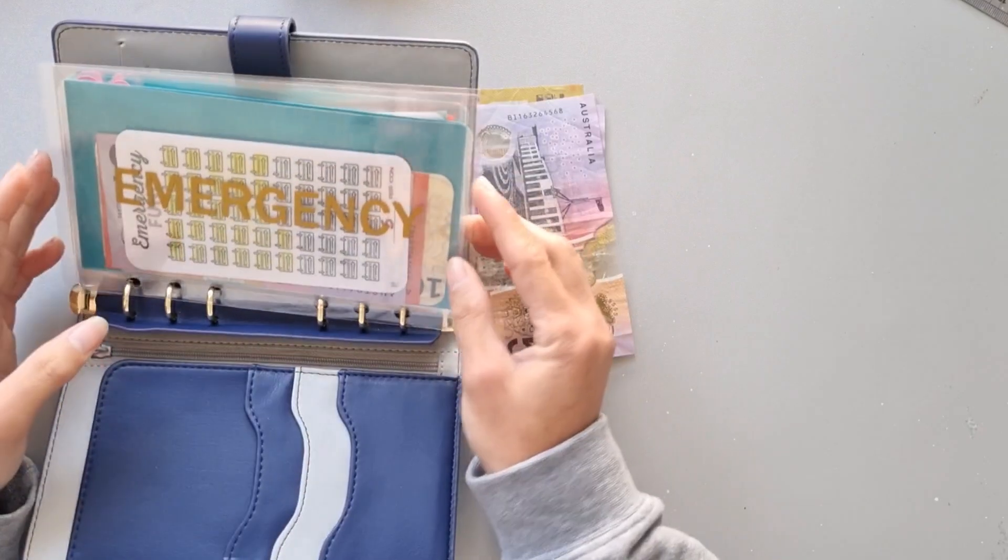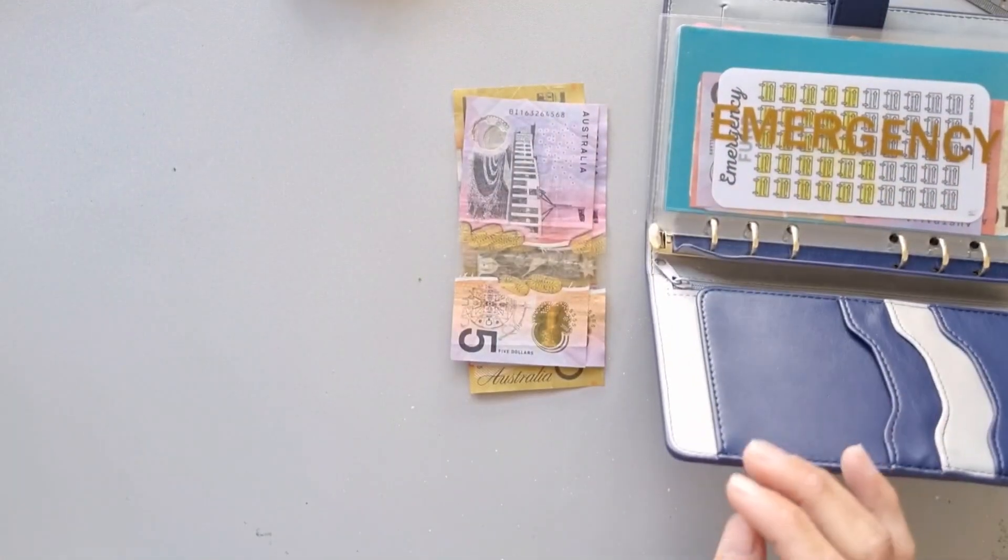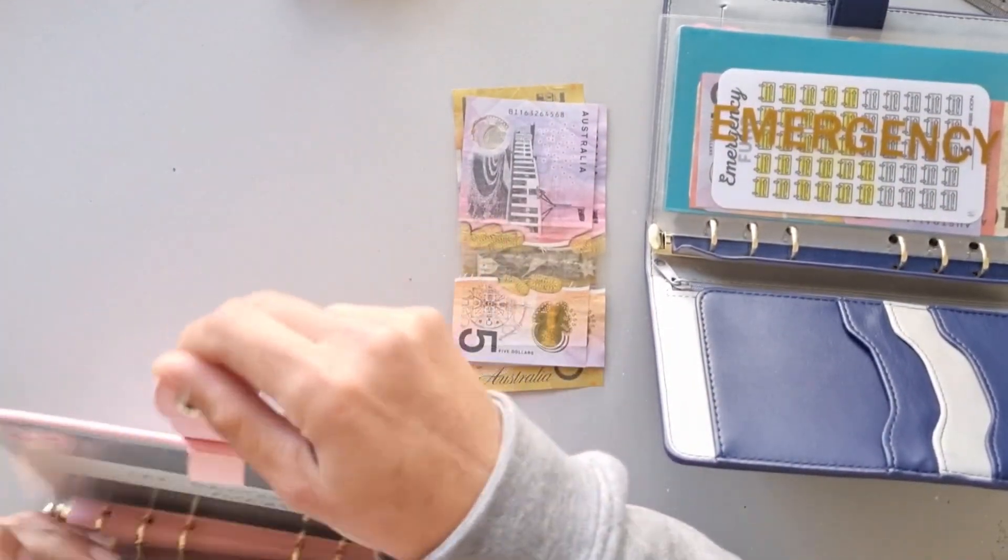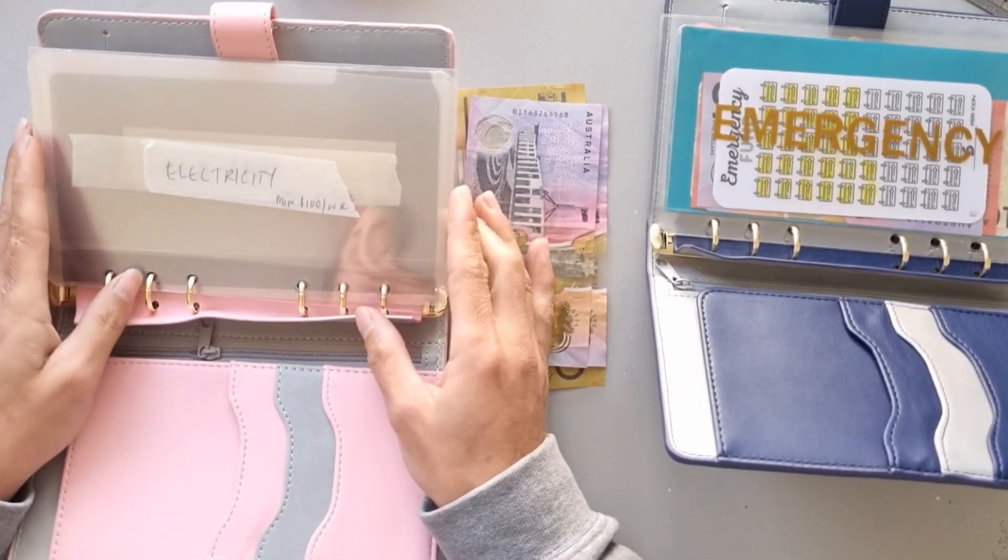So we've got Emergency, Just in Case, Extra Debt, Month Ahead. Let's put that to the side for a second and come into this pink one, which is some of our bills.